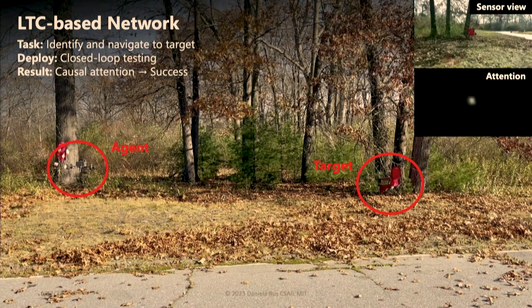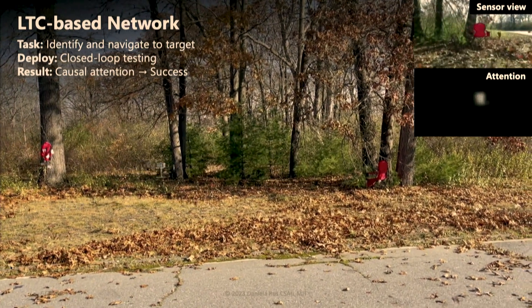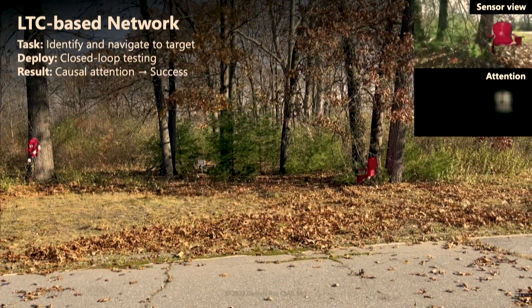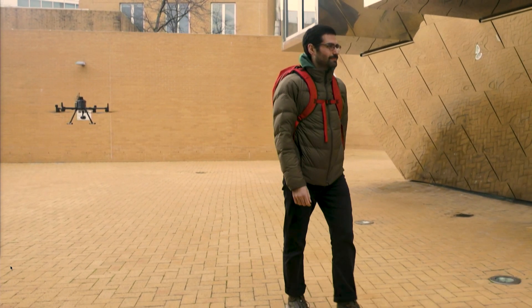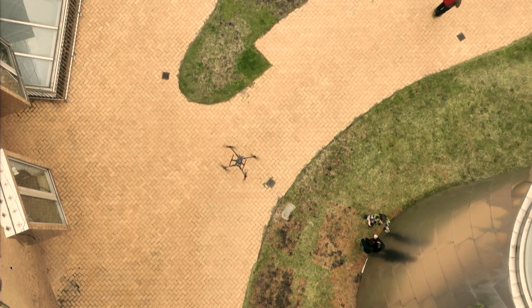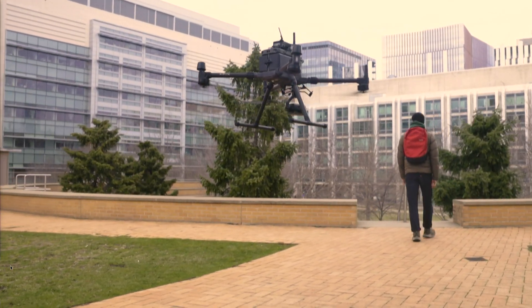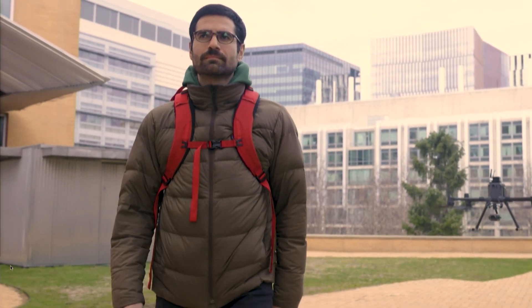But look at our liquid network solution. They are so focused on the task that the drone has no problem finding the object. We can further go all the way to winter with the same model trained in the summer, and we get a good solution. Finally, we can even change the context of the task entirely — put it in an urban environment, going from a static object to a dynamic object. The same model trained in the summer in the woods does well in this example, because we have a provably causal solution.